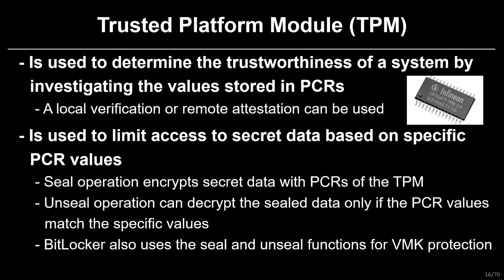TPM is a tamper-resistant device and has two versions: TPM 2.0 and TPM 1.2. TPM is used to determine the trustworthiness of a system by investigating the values stored in the PCRs. TPM is also used to limit access to secret data based on specific PCR values. For this, TPM has two operations — SEAL and UNSEAL — to manage secret data. The SEAL operation binds the secret data with PCRs of the TPM. The UNSEAL operation can release the sealed data only if the PCR values match the specific values.